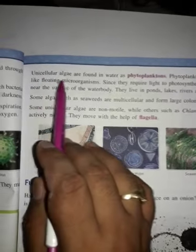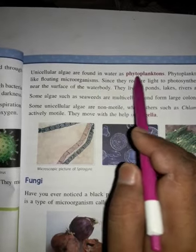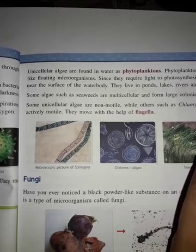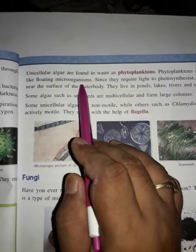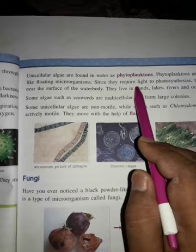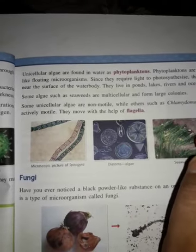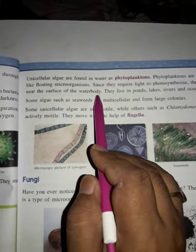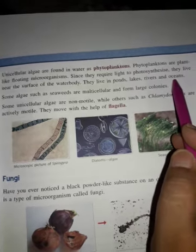Unicellular algae are found in water as phytoplanktons. Phytoplanktons are plant-like floating microorganisms. Since they require light to photosynthesize, they live near the surface of the water body. They live in ponds, lakes, rivers, and oceans.